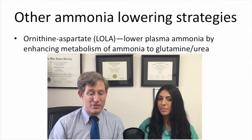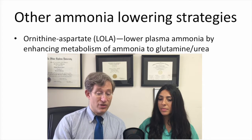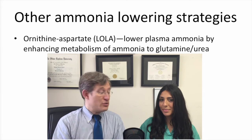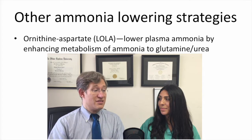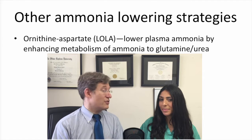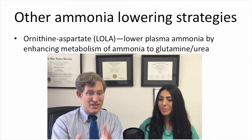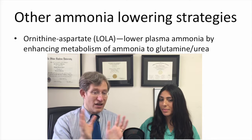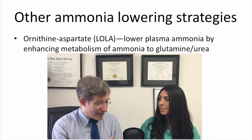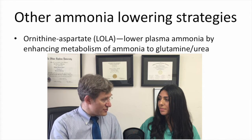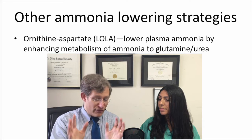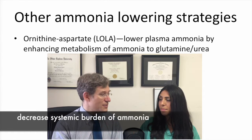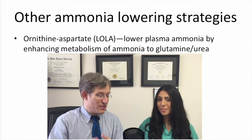The third category is giving LOLA — L-ornithine, L-aspartate — which enhances the metabolism of ammonia to glutamine and urea, decreasing the amount of systemic ammonia available to harm the brain. All of the complex theories about why patients with liver dysfunction develop encephalopathy boil down to this final common pathway: decreasing the systemic burden of ammonia, as it's felt to be the most effective approach at this point.